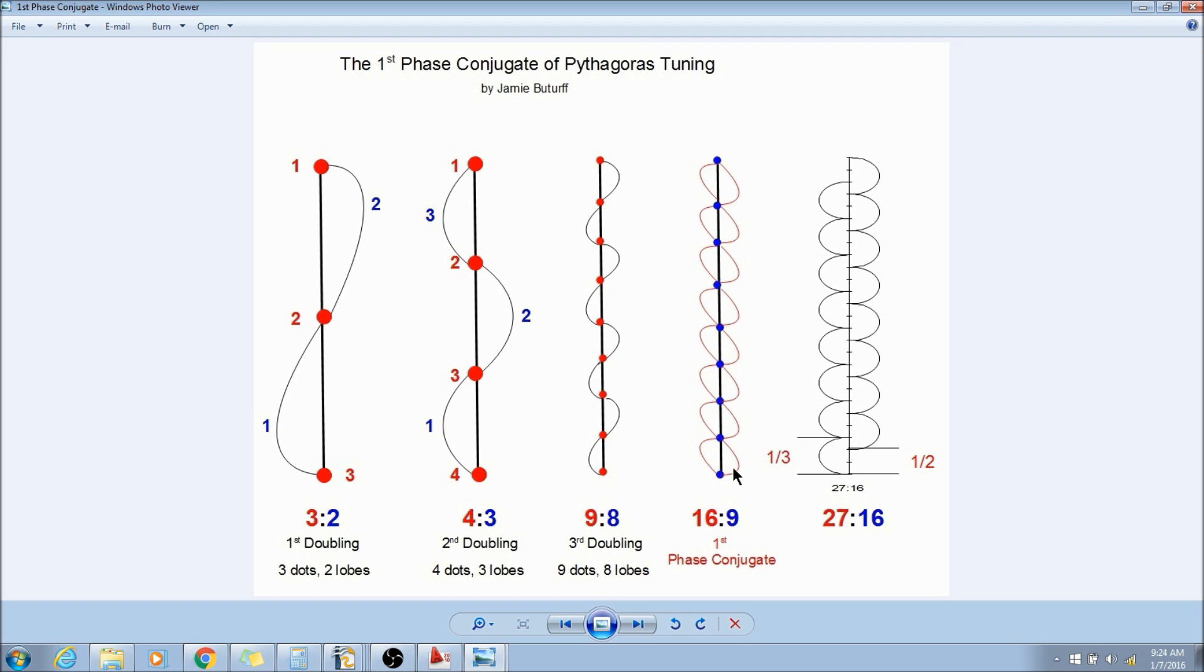In order for this ratio to resolve itself, we have to have 16 lobes. Here's something interesting: if you count here, we got one, two, three, four, five, six, seven, eight. We got eight lobes on one side, and then it reverses itself.